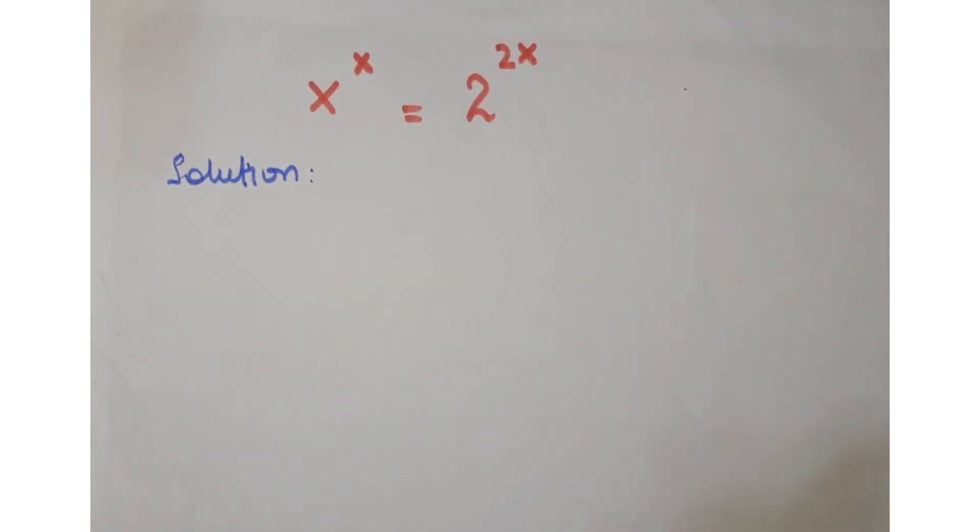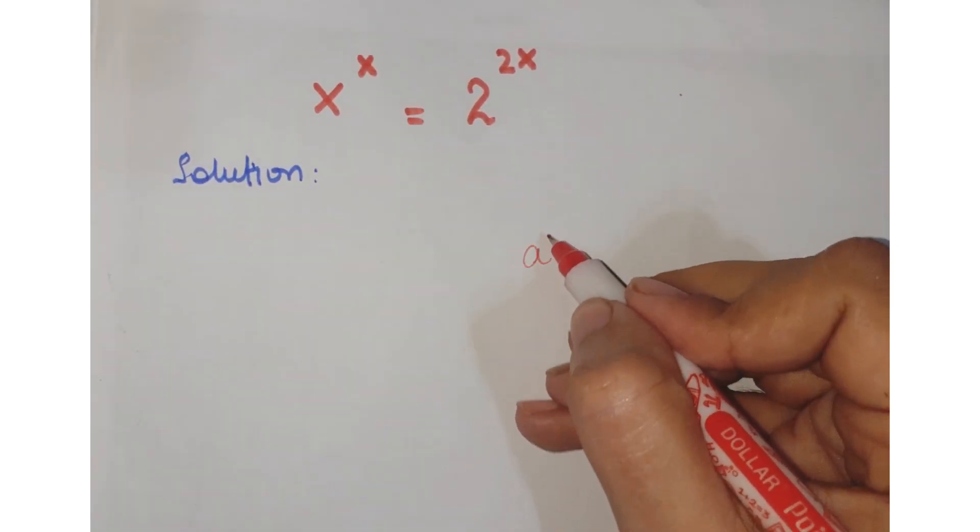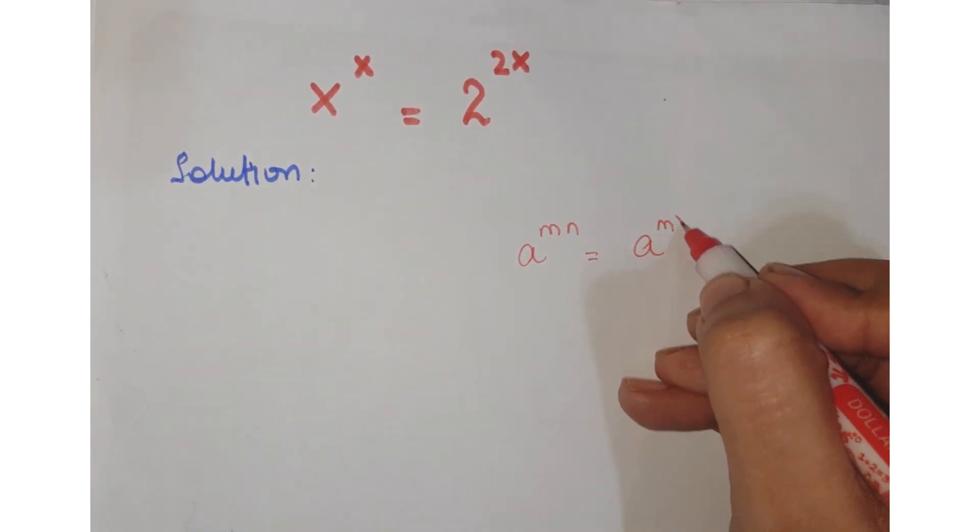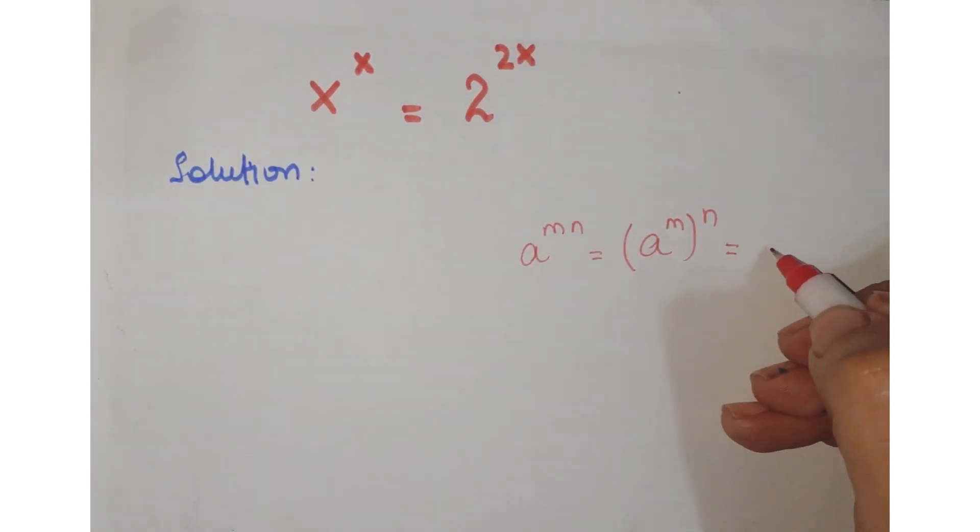As you know the rule that a to the power m times n can be written as a to the power m, whole to the power n, or a to the power n, bracket m.